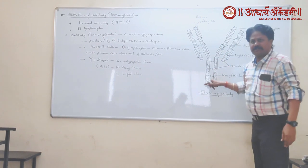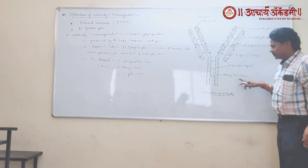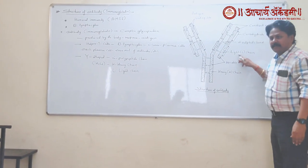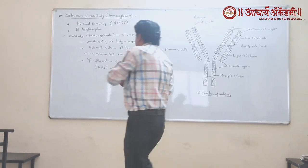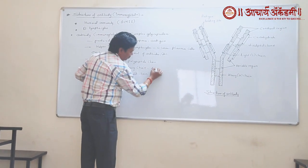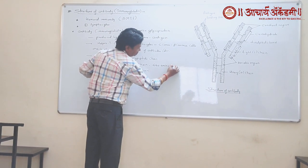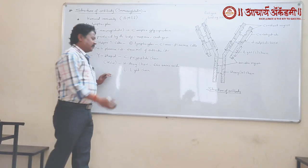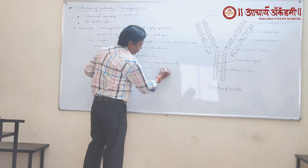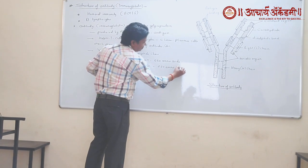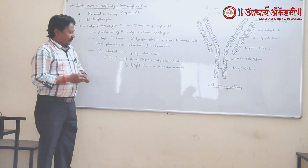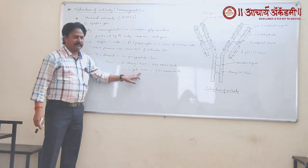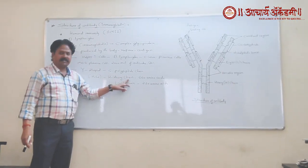Of these four polypeptide chains, two chains are long and are called heavy chains, and two chains are short and are called light chains. The heavy chain is composed of 440 amino acids, while the light chain is composed of approximately 220 amino acids.